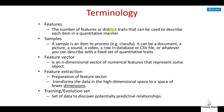The number of features are distinct traits that can be used to describe items in a quantitative manner. A sample is the item to process, classify, or document — for example a picture, a sound, a video, or a row in a database.